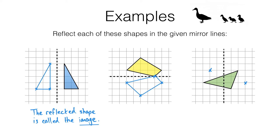And finally, the third corner is one square away from the mirror line on the right hand side, and it's going to be reflected one square away to the left. All we have to do is join up these three points using a ruler, and there we have our reflected shape.